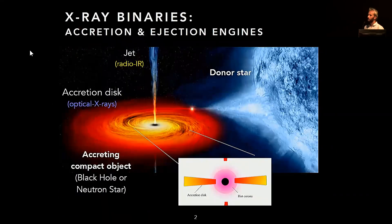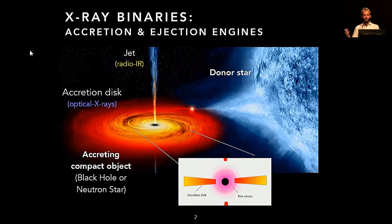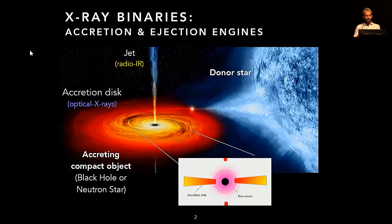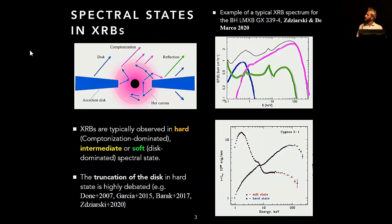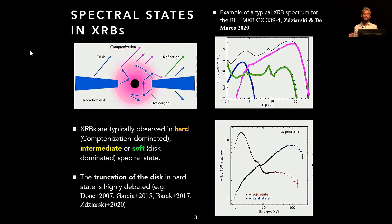You are pretty much convinced that X-ray binaries are accretion and ejection engines, as Natalie beautifully overviewed this morning. We have both inflows and outflows of matter: inflows in the form of an accretion flow composed of a corona and an accretion disc, which emits mainly in the X-rays, and outflows in the form of a jet which emits in the radio and infrared band. As these systems evolve during an outburst, they display mainly two spectral states in the X-rays: a hard spectral state where the emission is dominated by the hot corona, and a soft state where the emission is dominated by the disk.